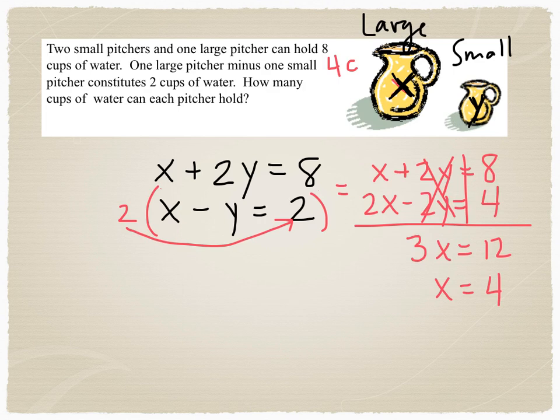Now I need to find Y. So let's plug it in. 4 minus Y equals 2. Or I could use 4 plus 2Y equals 8. Either way, you can see now that our answer for Y is going to be 2 when I solve the equation. And the small pitcher holds 2 cups of water. Next question.